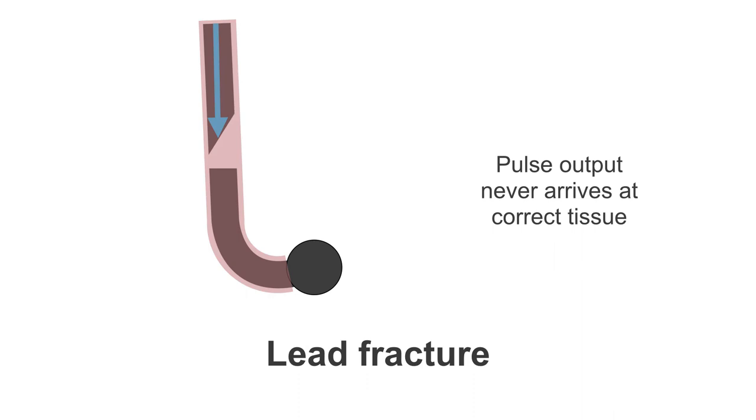The third lead catastrophe that can happen is a lead fracture. Now, in a lead fracture, the wire that runs down the lead has broken, and now there is a break in the electrical circuit. Now, remember, at this point, it isn't possible for the electrical current to leave the lead, because here is still insulated. So actually, the electrical current is just met by a dead end. Again, the pulse output never arrives at the correct tissue.